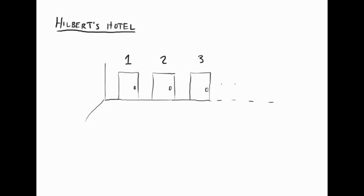In an ordinary hotel, you'd be out of luck, but in Hilbert's hotel, there's always room for more. To open up a room, the manager simply asks each guest to leave their room and move down one. Since there is no biggest integer, everyone has a new room, and the first room is vacant.